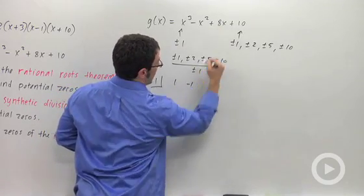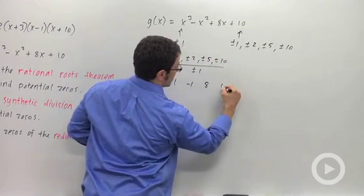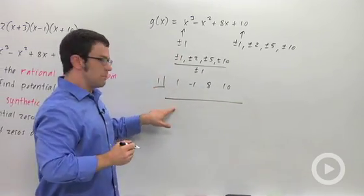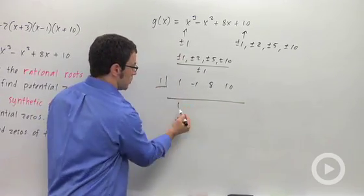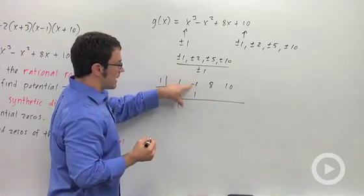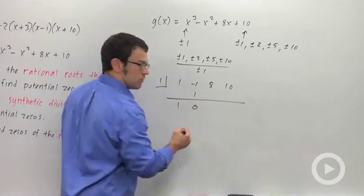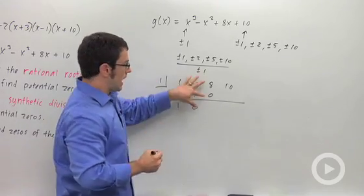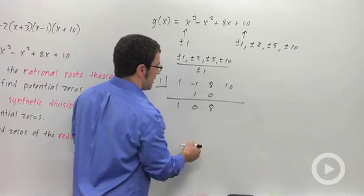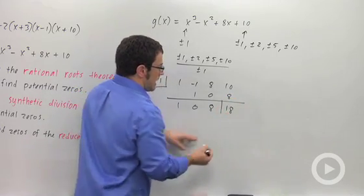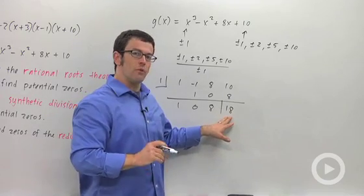So the way synthetic division works is I'm using 1 as my zero. I write the coefficients of this polynomial down here: 1, negative 1, 8, and 10. The 1 comes down. I multiply, write the result here. So 1 times 1 is 1. Then I add and I get 0. Then I multiply again. 1 times 0, and I write the result here. Then I add again, 8. And I multiply. 1 times 8 is 8.